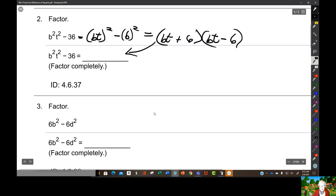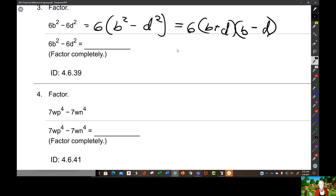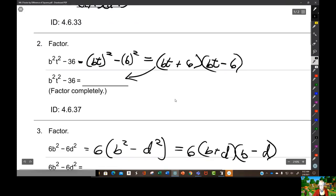Down here you've got a 6 and a 6, so you're going to pull that out first. You've got b² minus d². Well, that's a perfect square minus a perfect square. So you're going to have 6, put a b, put a b, put a d, put a d, put a plus and put a minus—different signs in between. Make sure I did that up here. Yes, I did.